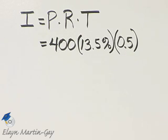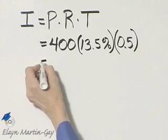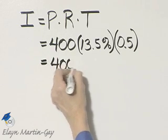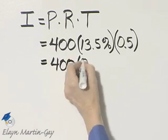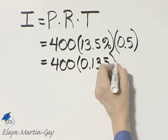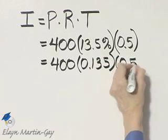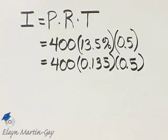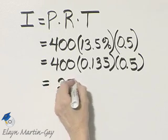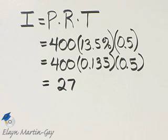Then to find the interest, we multiply. Let me go ahead and take a step, and I'll write this as an equivalent decimal. There it is. And then times decimal 0.5. If you multiply, you'll have an answer here of 27. Now, what does 27 mean in the context of this problem?